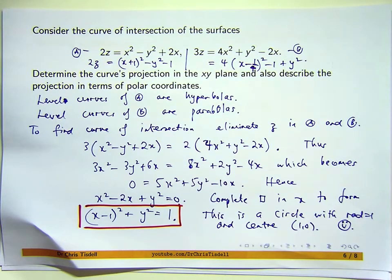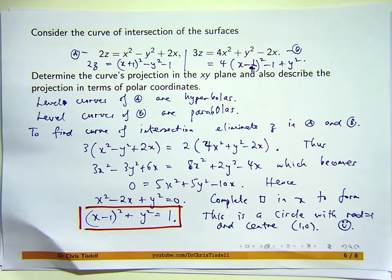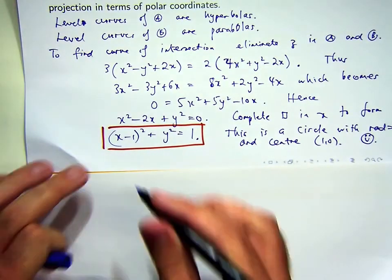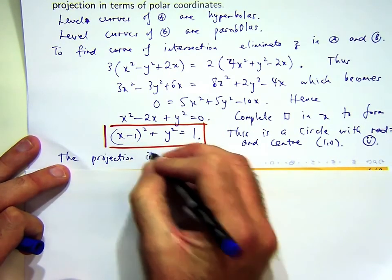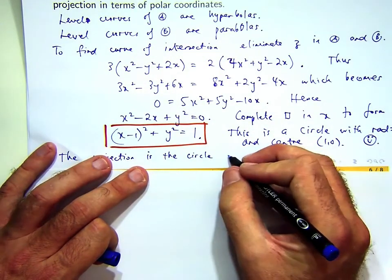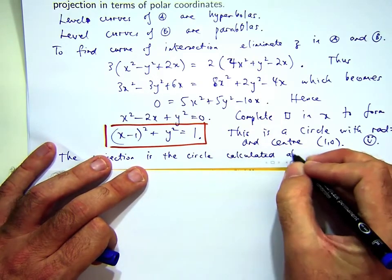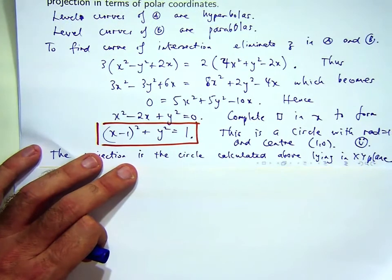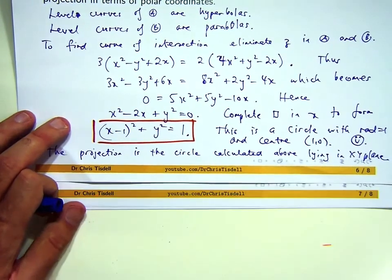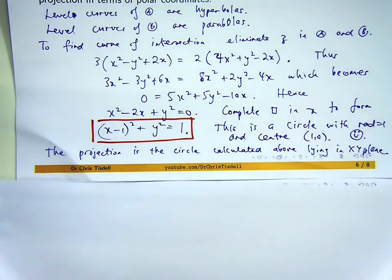The last part of this question is a little tricky. Describe the curve in terms of polar coordinates. The projection is the circle calculated above lying in xy plane. Let's talk about polar coordinates now.